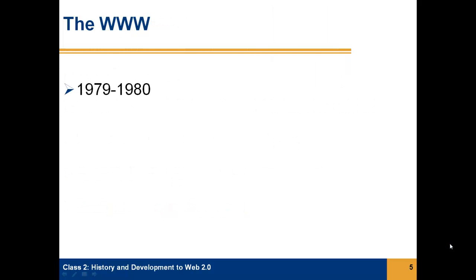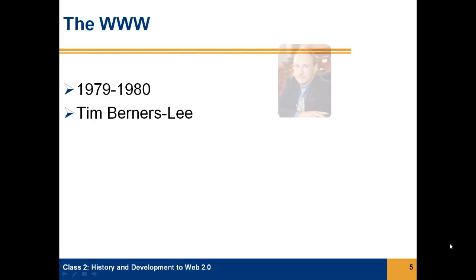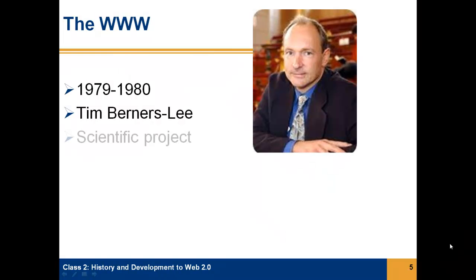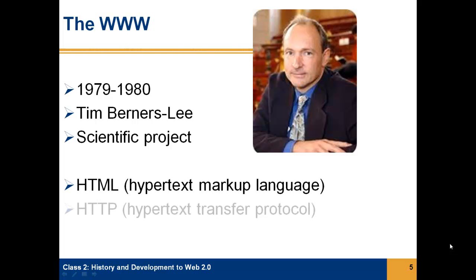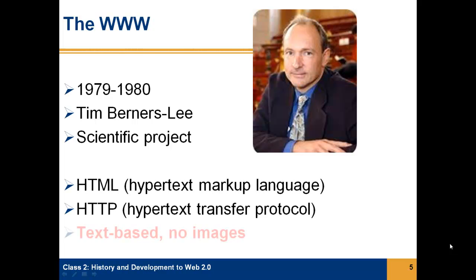The World Wide Web came in 1979-80. It was developed by Tim Berners-Lee as a scientific project. Tim Berners-Lee wrote the HTML language and the HTTP protocol, which are the basis for the Internet and the Web today. At this time, everything was still text-based — there were no images.